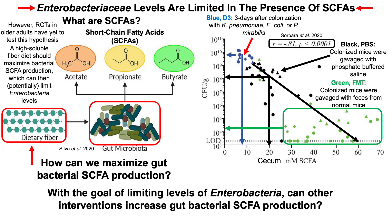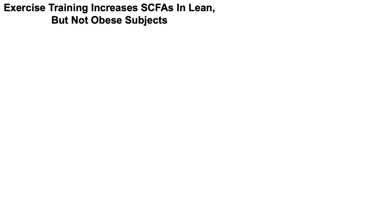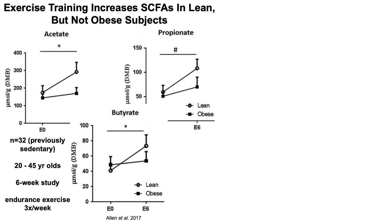Another intervention that can increase short-chain fatty acids is exercise training. In a relatively small study of 32 previously sedentary individuals aged 20 to 45, a six-week program of endurance exercise three times per week showed significant increases in acetate, propionate, and butyrate for lean subjects with a BMI less than 25. However, for obese participants with a BMI greater than 30, exercise training did not impact short-chain fatty acid levels.